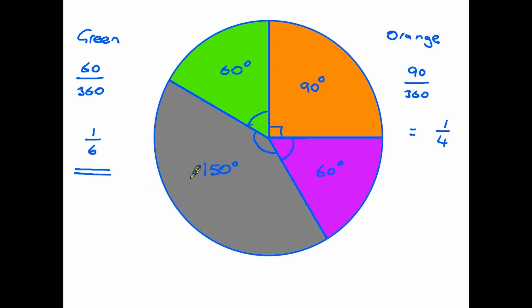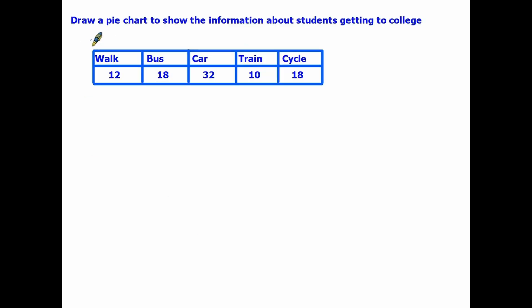Now let's have a look at a question you might get in an exam. So here we are being asked to draw a pie chart to show the information about how students get to college. We're given the information and the options of walking, bus, car, train, and cycle, and we have the numbers for each. So we need to change these numbers so that they will fit into a pie chart. And don't forget, a pie chart has to add up to 360.